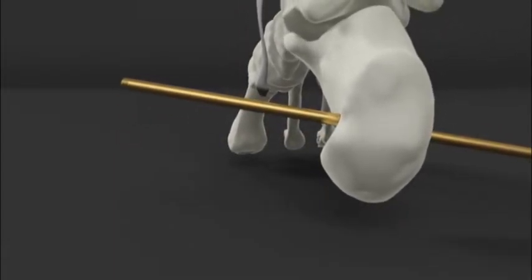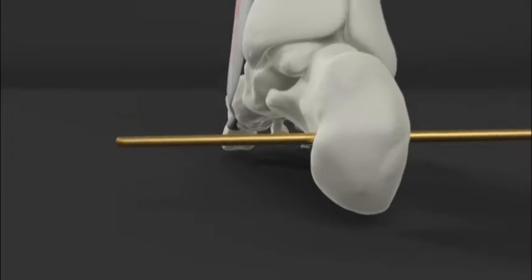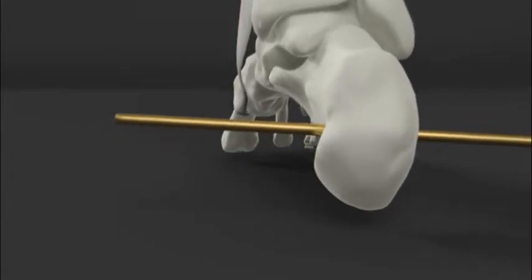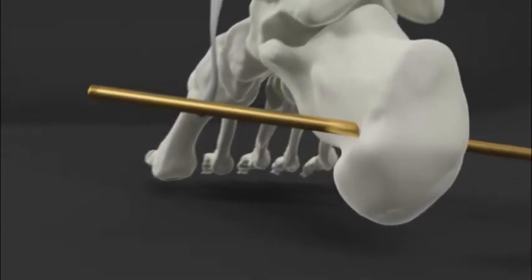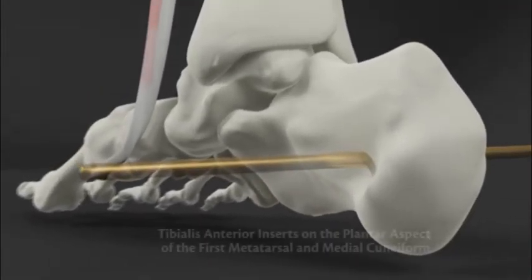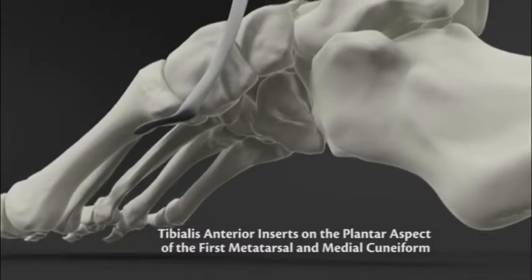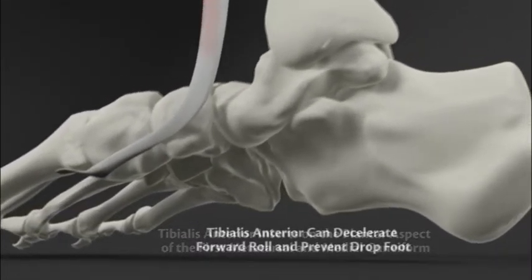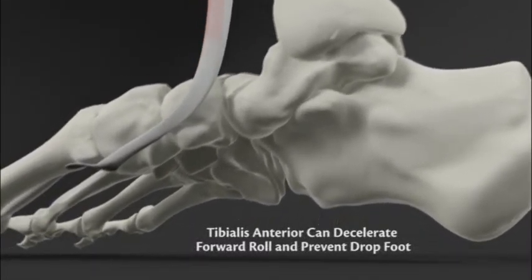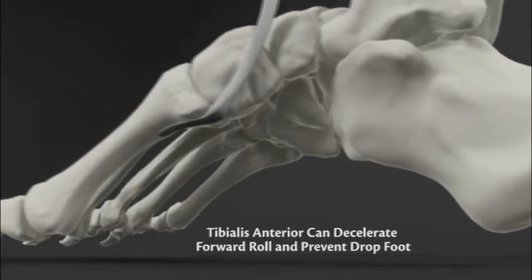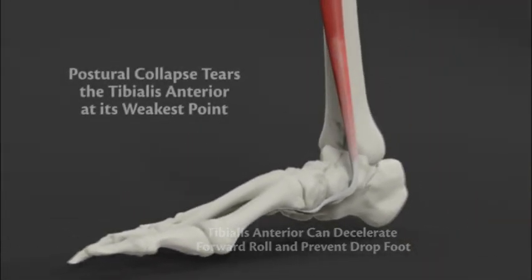Postural collapse involves a forward roll of the calcaneus around the heel rocker axis. The insertion point of the tibialis anterior is placed a long distance from this axis on the plantar aspect of the first metatarsal and medial cuneiform. This gives it excellent mechanical advantage to decelerate forward roll and prevent drop footing.